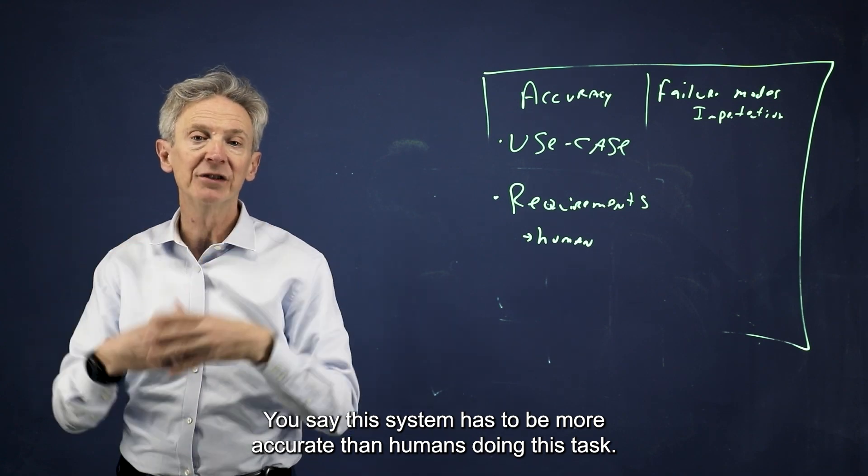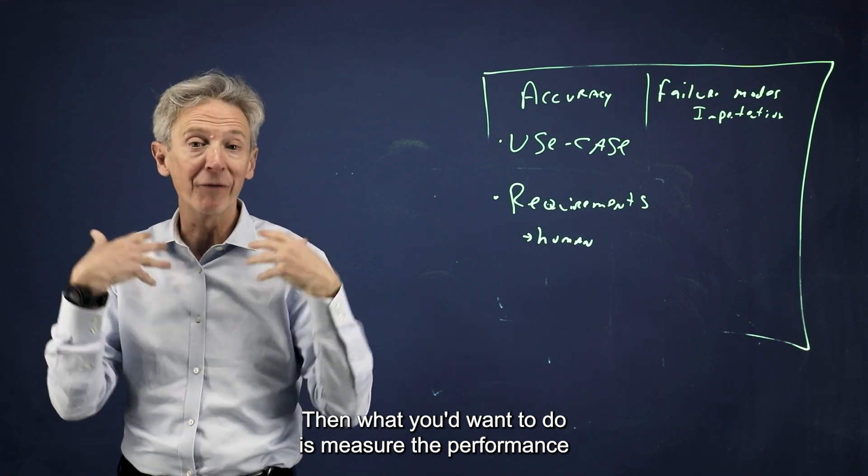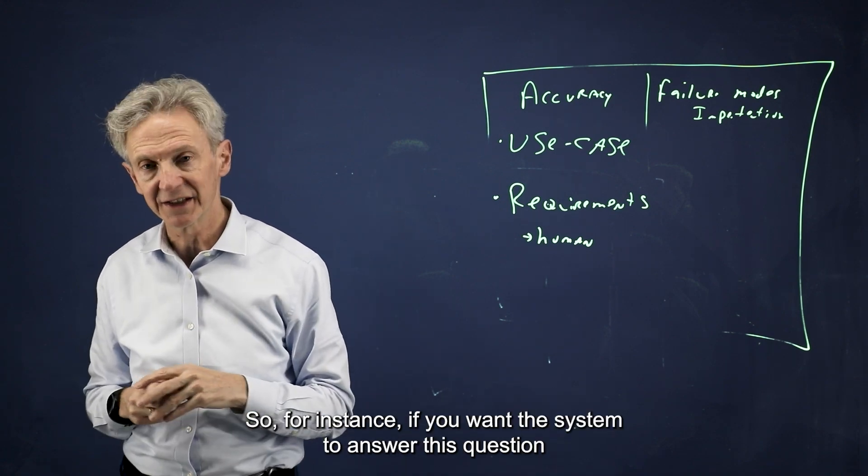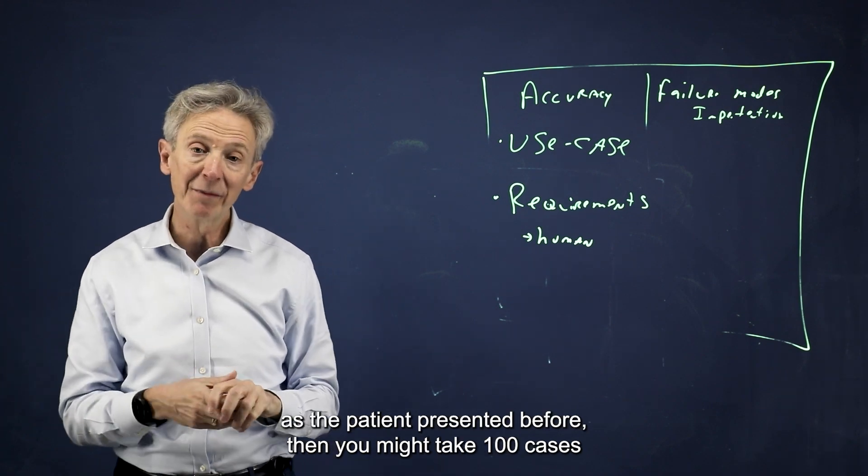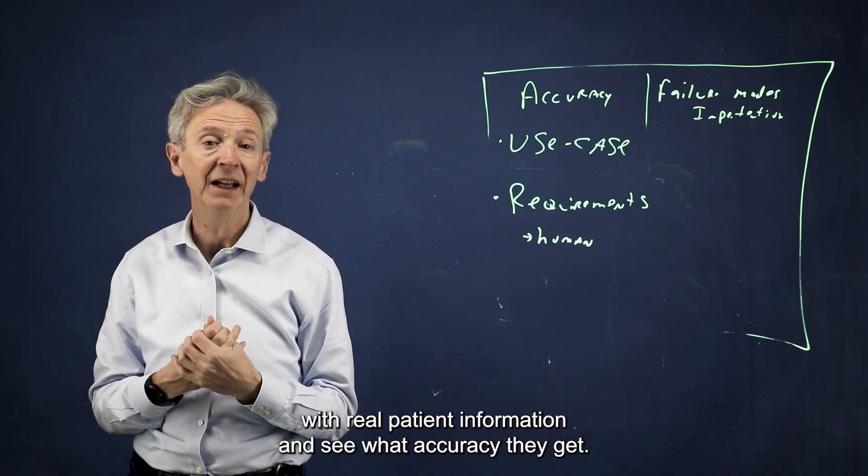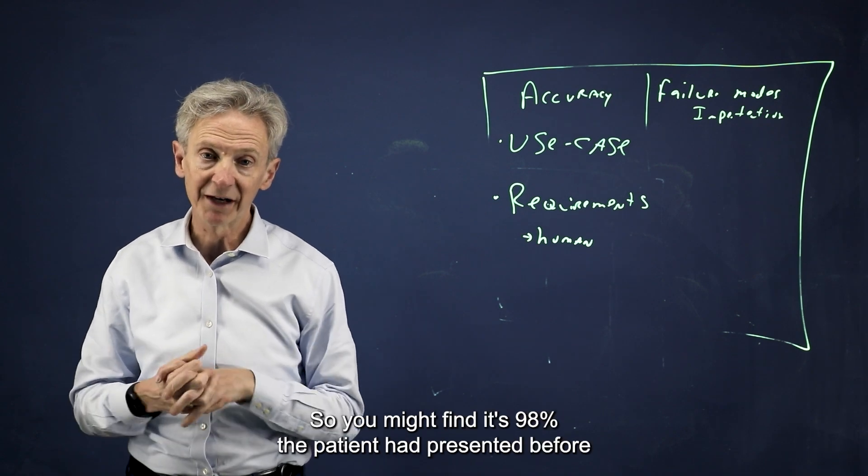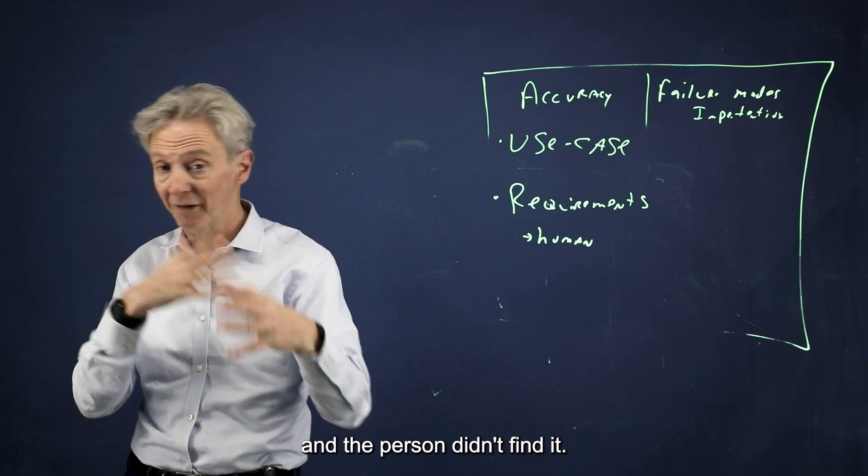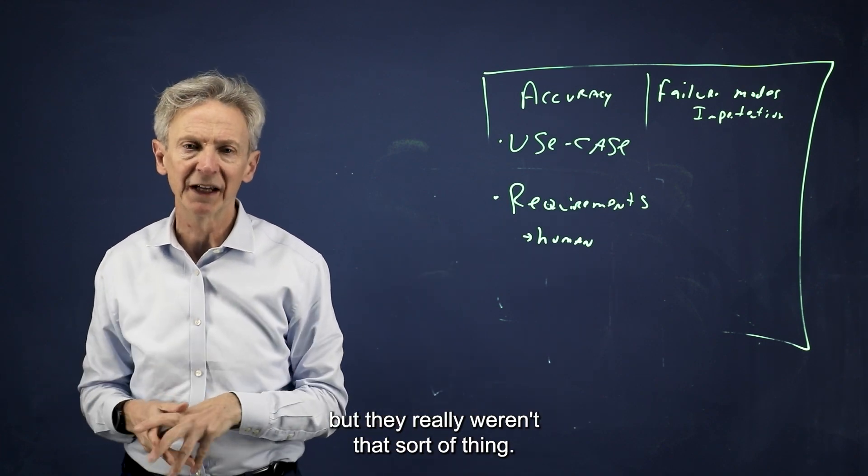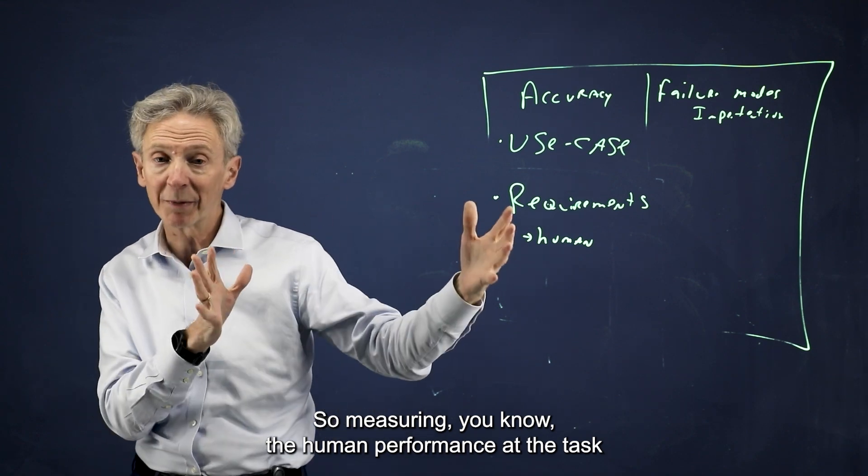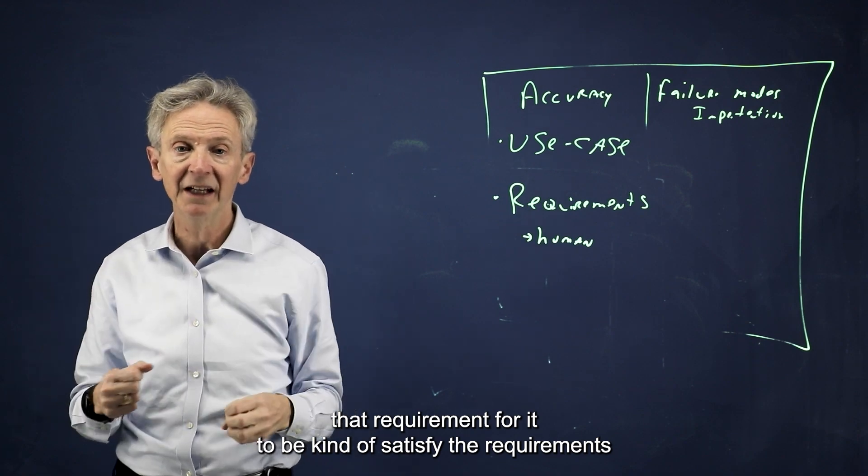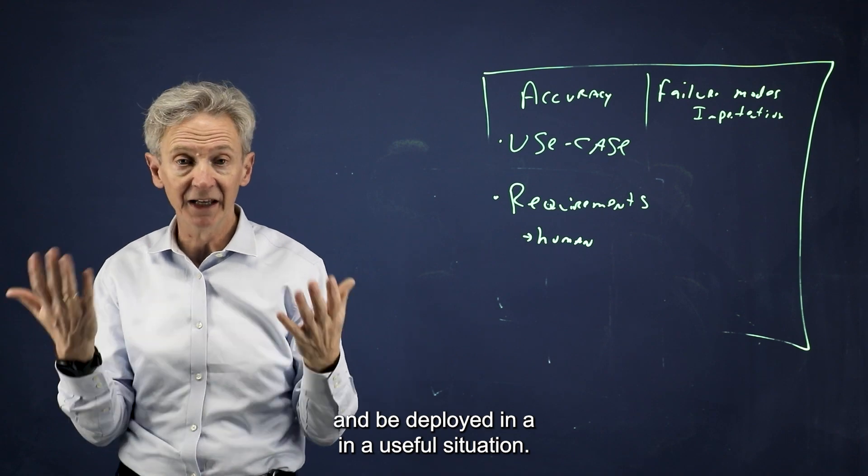Let's say you choose that. You say this system has to be more accurate than humans doing this task. Then you'd want to measure the performance of clinicians or your prototypical users at the task. For instance, if you want the system to answer has the patient presented before, you might take a hundred cases and a group of clinicians and have them answer the question with real patient information and see what accuracy they get. You might be surprised that it's not 100%. You might find it's 98% because the patient had presented before but the person didn't find it. It was buried deep in the chart.